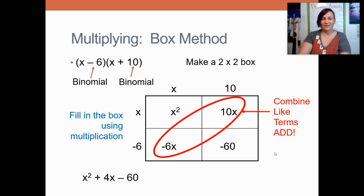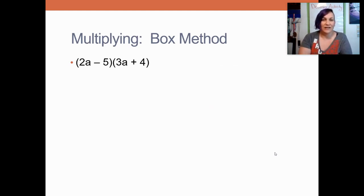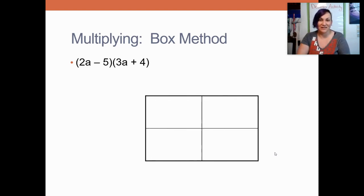Let's try one more together. So here, again, I have a binomial, two terms, 2a and minus 5. And then another binomial, 3a and plus 4. So I'm going to draw a 2 by 2 box again today.